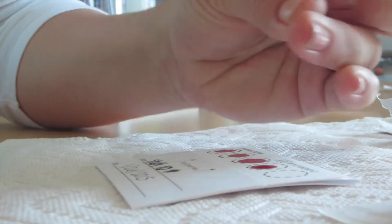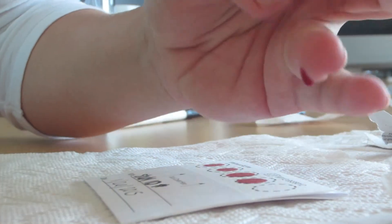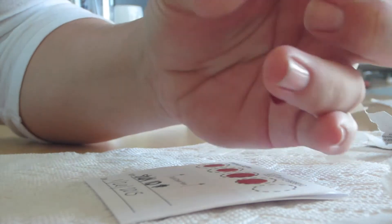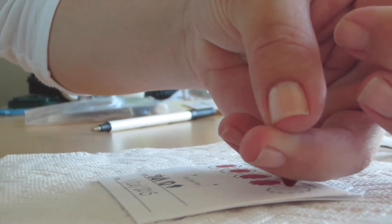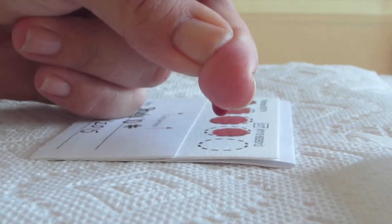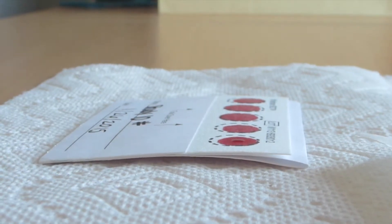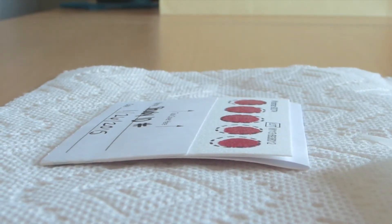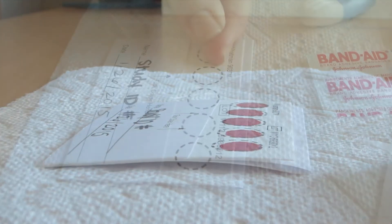Continue milking the finger and hold the drop of blood over one of the circles on the collection card. Let the blood drop fall onto the middle of the circle. Place one large drop of blood that falls per circle and fill the entire circle. Follow the above procedure for all five circles on the collection card.